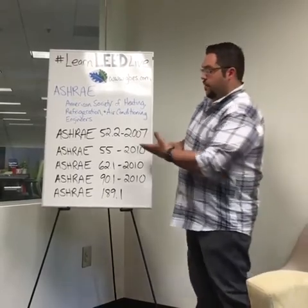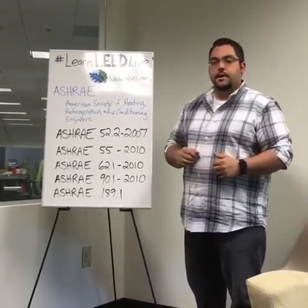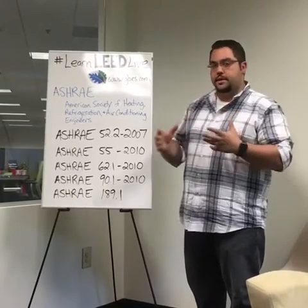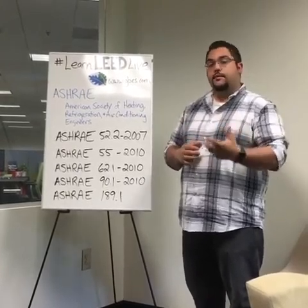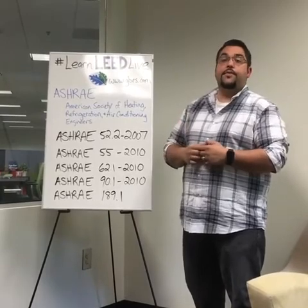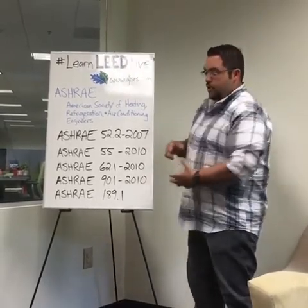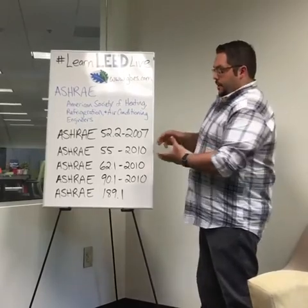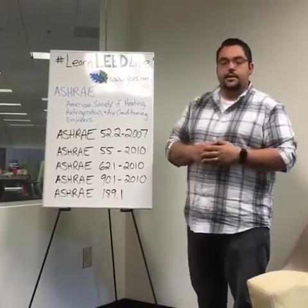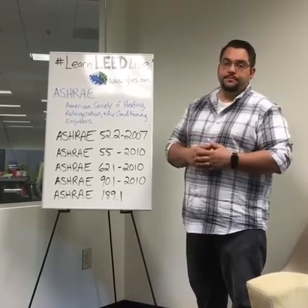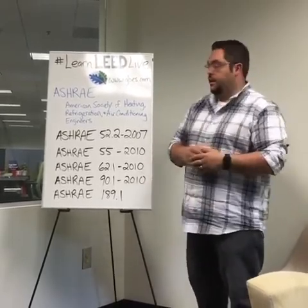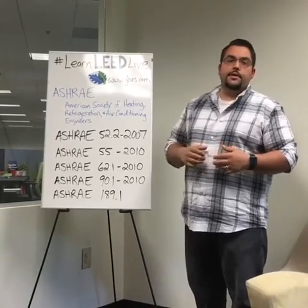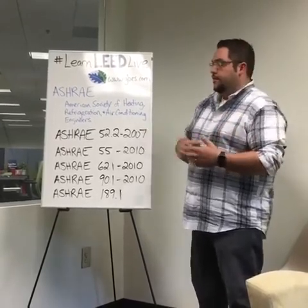One of the first ASHRAE standards that's going to show up is ASHRAE 52.2, and that's when we're selecting our filters. On your LEED exams you need to know that MERV filters have a range from 1 to 16. During construction you want MERV 8 filters, and during occupancy you want MERV 13 filters. All of you are actually going to test for a LEED version 4 exam, the latest and greatest version of LEED, and we've upgraded to the more recent ASHRAE standards — they update about every three years typically. So ASHRAE 52.2: just think filters for your exam.